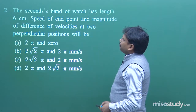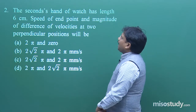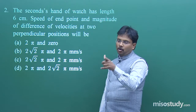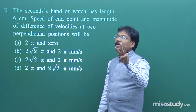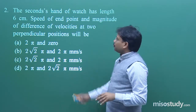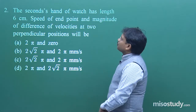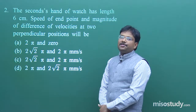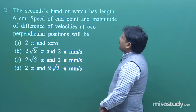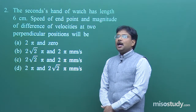Let us look at question number two. The seconds hand of a watch — if you look at your wall clock or wrist watch, there are three hands: hour, minute, and second. This question is about the seconds hand, which has length 60 cm. The speed of the endpoint and the magnitude of the difference of velocities at two perpendicular positions is how much?